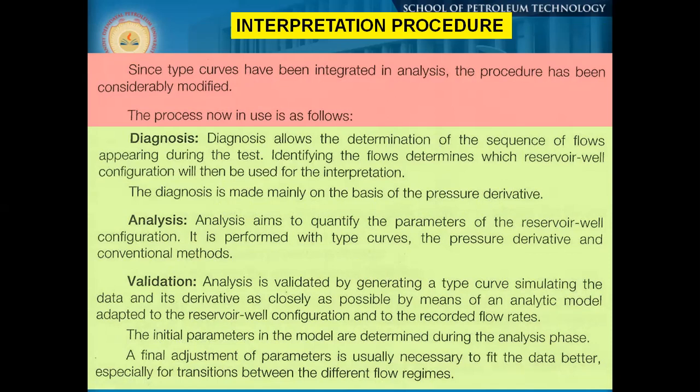The first derivative (p-dot) helps us match with the proper type curve. Type curve analysis aims to quantify the parameters of the reservoir-well configuration. It is performed using type curves, the pressure derivative, and the conventional method together. Validation means checking whether your interpretation really matches the well and reservoir data. Analysis is validated by generating a type curve simulating the data with this derivative as closely as possible by means of an analytical method adapted to the reservoir configuration and the recorded flow rates.